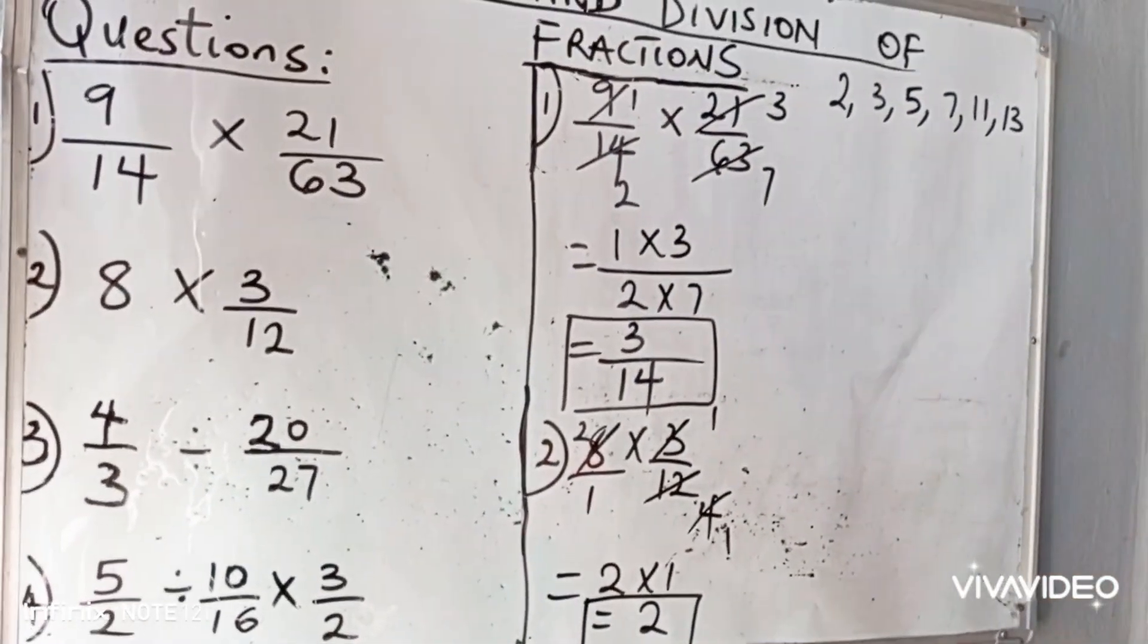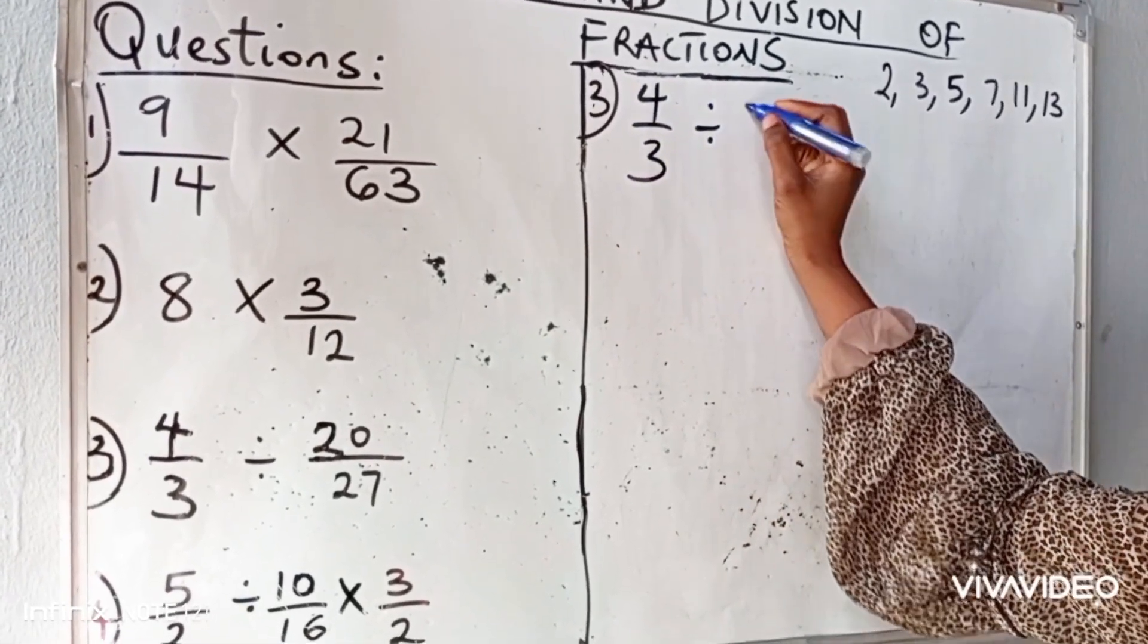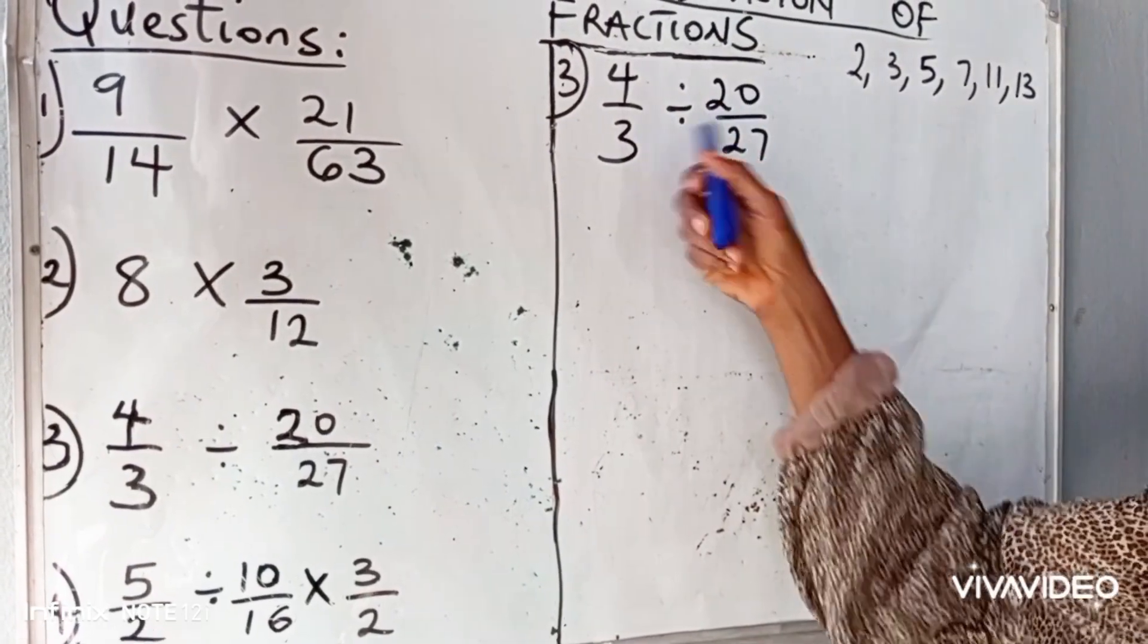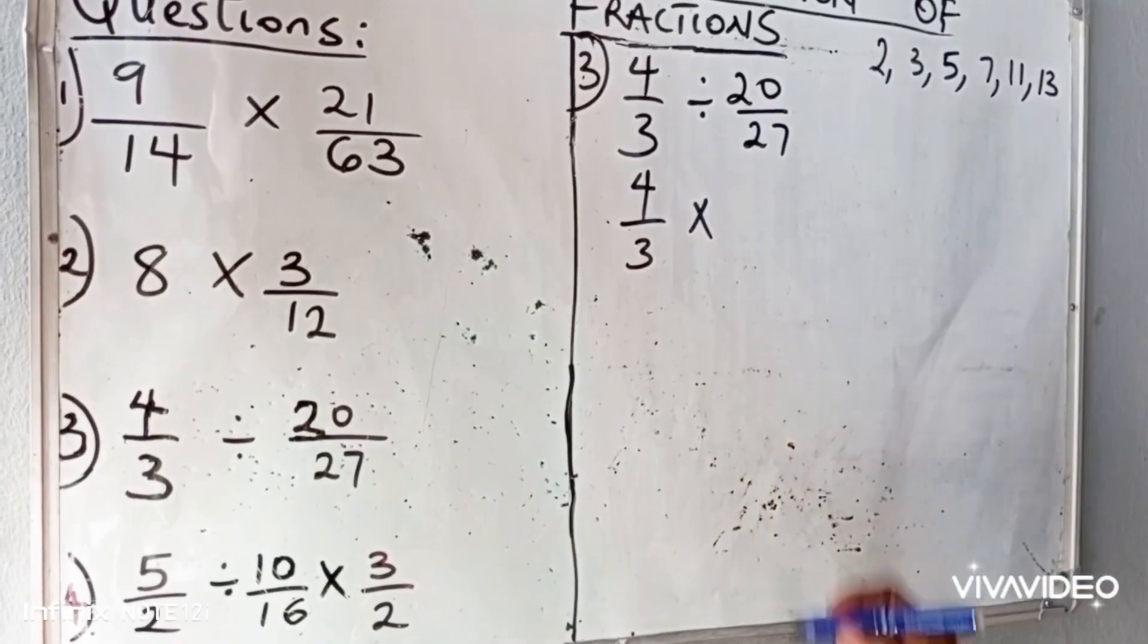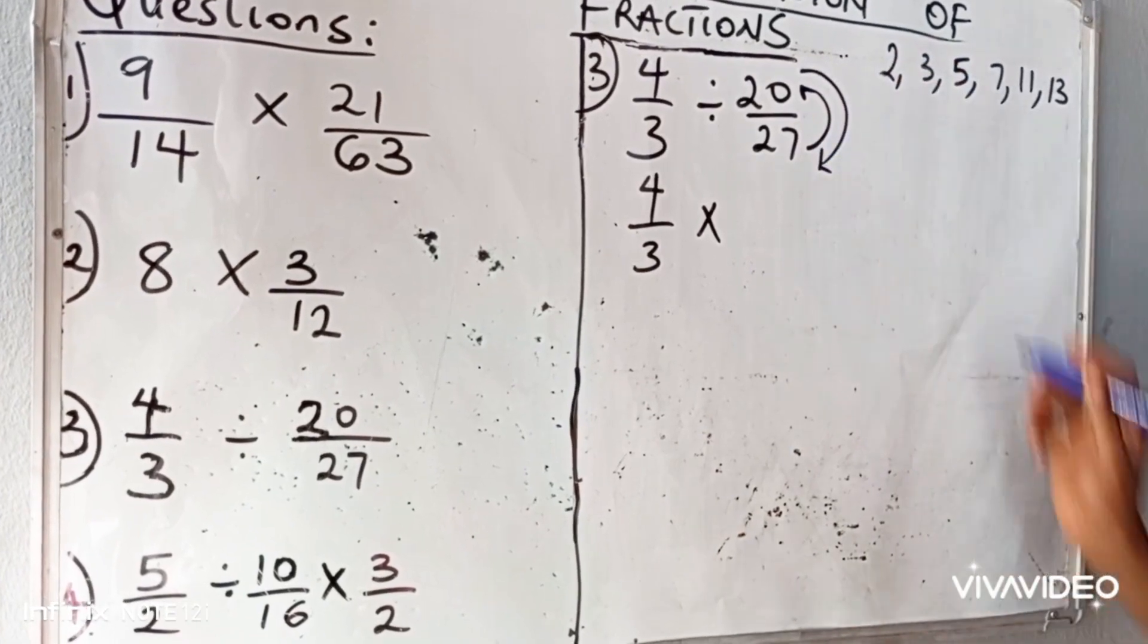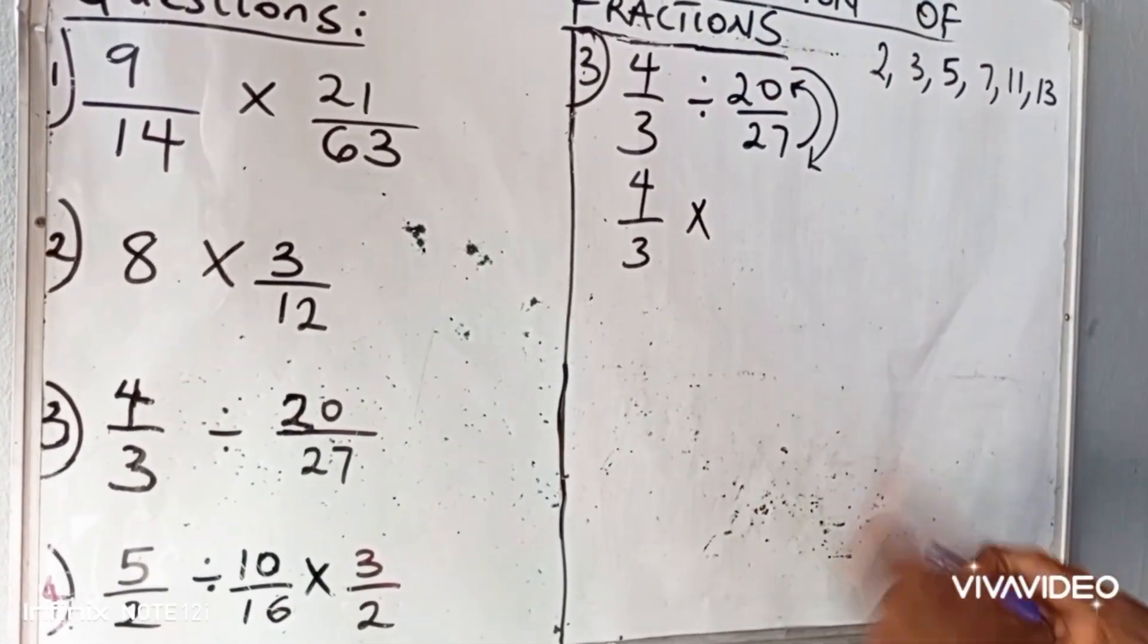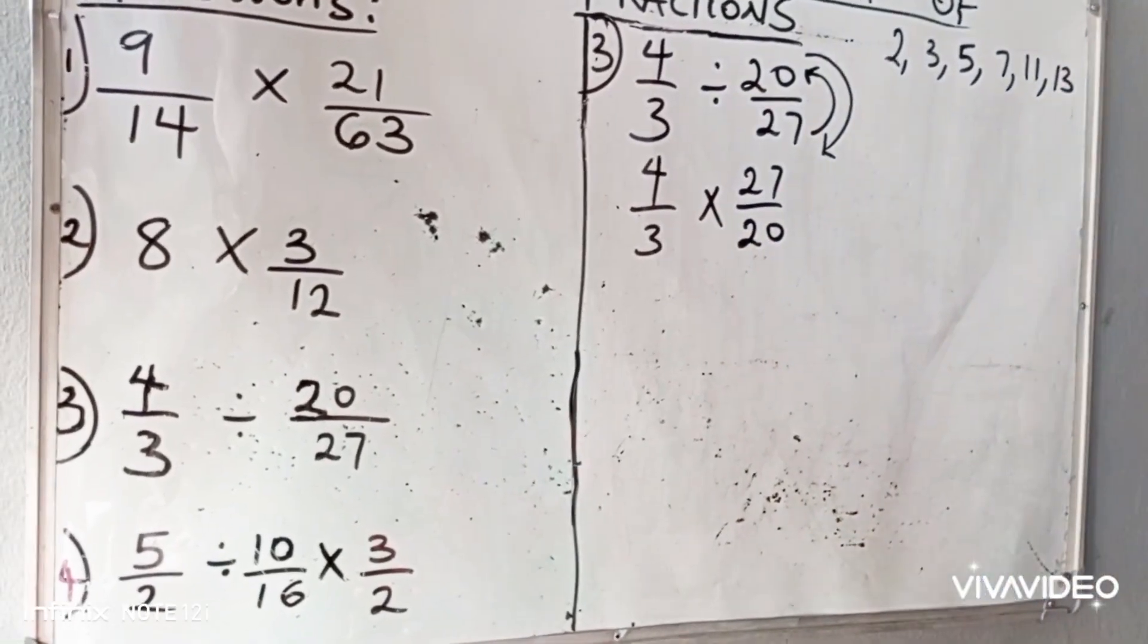Question number 3. We have 4 over 3 divided by 20 over 27. The first step is to change our division to multiplication. So we have 4 over 3 times. And when we change to multiplication, the denominator will have to be the numerator and the numerator will have to be the denominator. That means we will change the right-hand side of the fraction to its inverse. So we have 27 all over 20. Now let us divide.